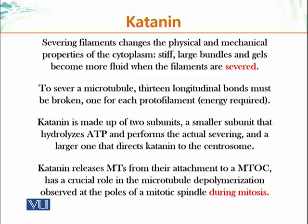Katanin is made up of two subunits: the smaller subunit that hydrolyzes ATP and performs the actual severing, and a larger one that directs katanin to the centrosome. Note that beta-catenin is a completely different protein with a completely different function — we talked about it when discussing adherens junctions. This protein is pronounced 'katanin.' Katanin releases microtubules from their attachment to a microtubule organizing center.